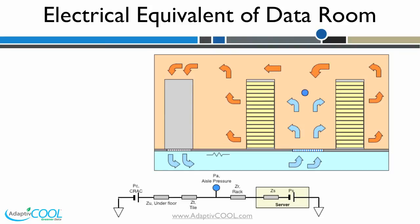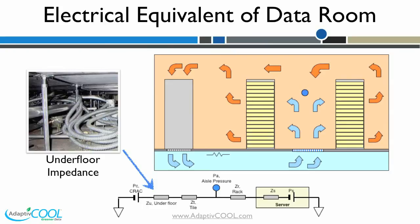The equivalent circuit as shown includes impedance due to obstructions in the underfloor plenum and perforated tile. The pressure difference between the intake and exhaust of a rack is nearly zero.